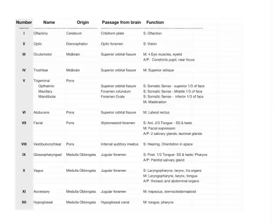The function column uses letters: S for sensory function, M for motor function, and A/P. The A stands for autonomic nervous system — autonomic parasympathetic. There's a sympathetic and a parasympathetic division. All sympathetic nerves come out of the spinal cord, and almost all parasympathetic nerves come out of the brain. Every autonomic nerve that is cranial is on the parasympathetic side. There are no sympathetic nerves from the brain itself.